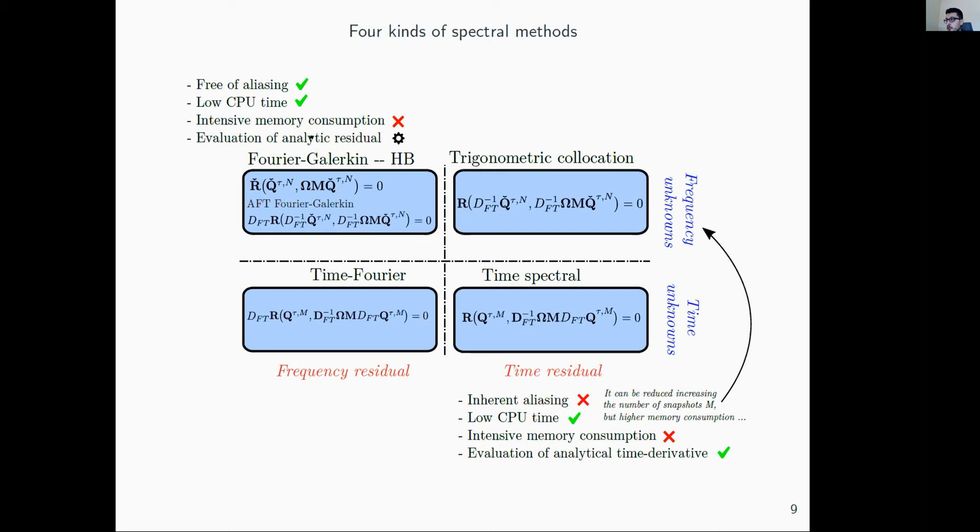The CPU time is much lower than using time marching. However, you pay in memory because you have a large system with many snapshots or modes. The difference between harmonic balance and the others is that evaluation of the residual is analytical, so you need to develop it, whereas in others it's done numerically by discrete Fourier transform. Being analytical, it's also free of aliasing errors.